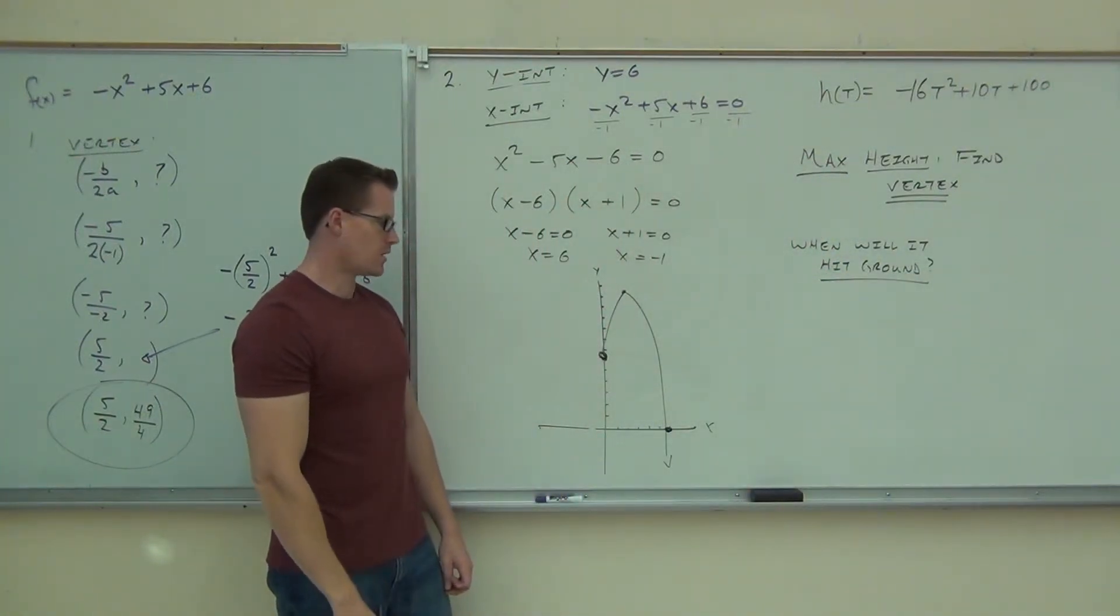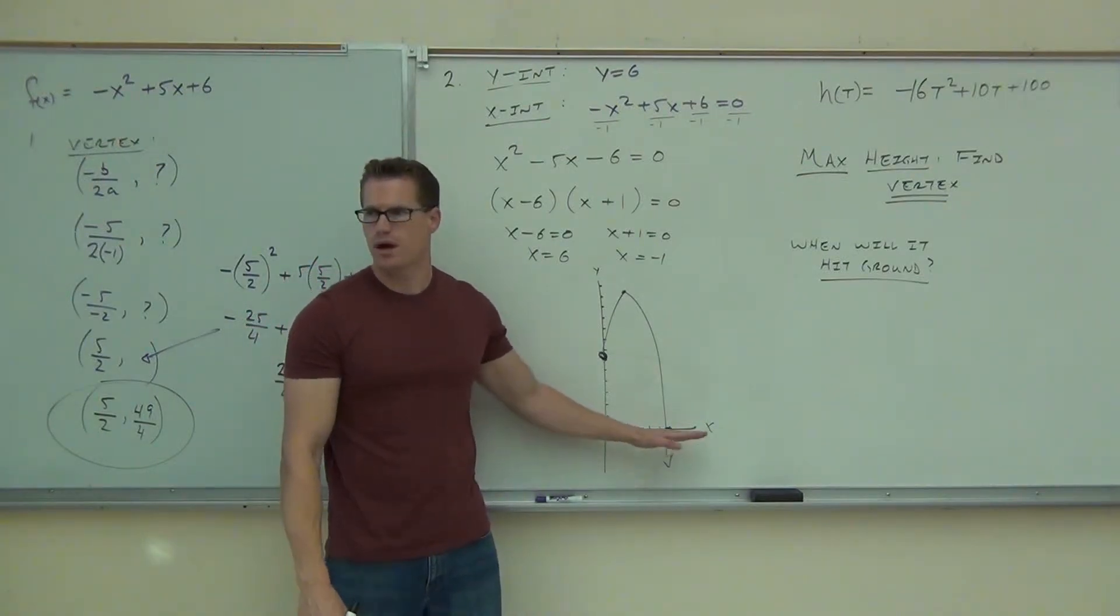When does the rocket hit the ground? Whenever it hits the X axis, right? That's the ground.